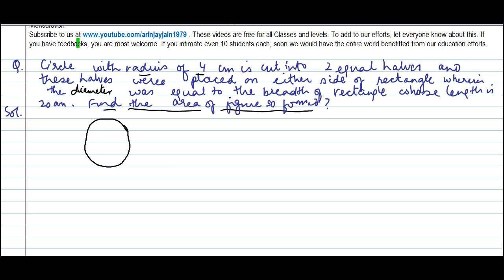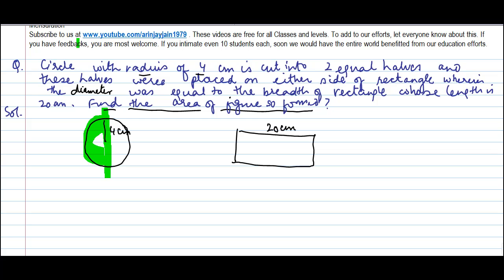So we have two items here. One is a circle and the other one is a rectangle. The length of this rectangle is 20 cm and the radius of the circle is 4 cm. The circle was split into two parts — one part was put on one side, and the other part was put on the other side. The diameter was equal to the breadth of the rectangle.